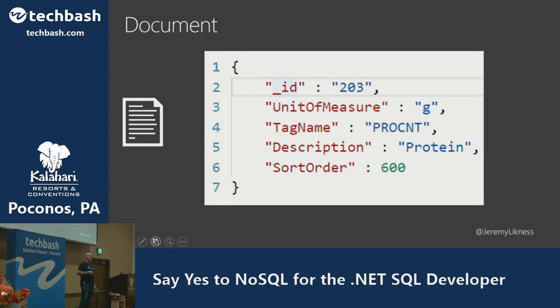A document database is just what it says — a set of properties. They don't have to be flat; you can have nested properties.